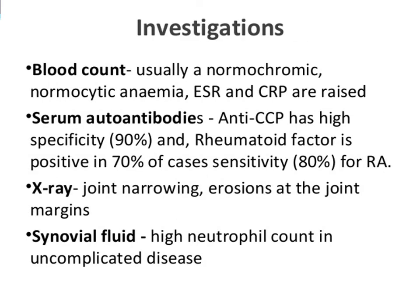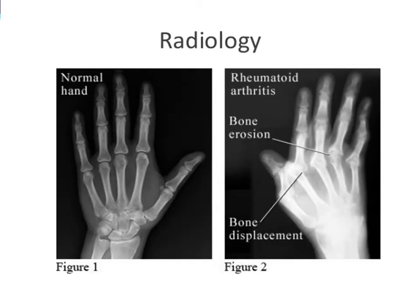Investigations include blood count and serum auto-antibodies, in which anti-CCP has a high specificity of 90% and rheumatoid factor is positive in 70%, with a sensitivity factor of 80%. X-ray can show narrowing of the joints. Synovial fluid will be tested to find a high neutrophil count. Radiological tests can reveal deformation, bone erosion, and bone displacement.